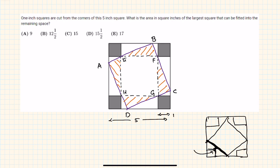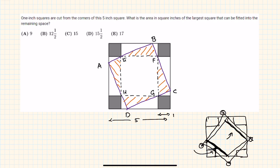If you increase the size then the square would go out of the remaining space. So what you need to do is rotate the square. Once you rotate it, these vertices will come and fit into the remaining space. This is how the final figure would look — this would be the largest area of the square.